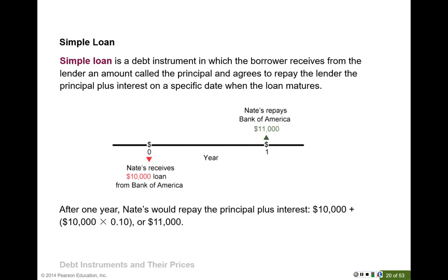For a simple loan, the first debt instrument, let's look at this graph. You can see here that Nate borrows a $10,000 loan from Bank of America today. After one year, Nate will repay the loan — $10,000 plus $1,000 interest. For a simple loan, keep in mind that there is only one payment on the maturity day. This one payment includes two parts: one is principal — in this case $10,000 — plus interest.